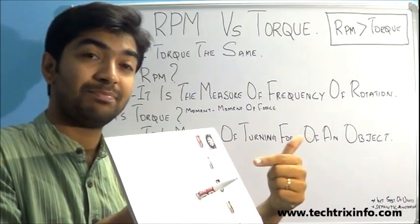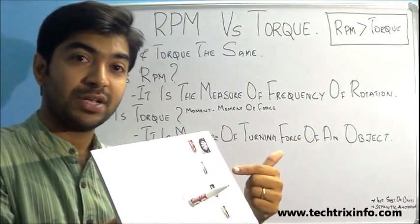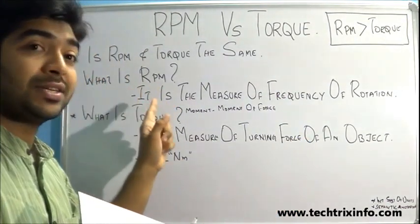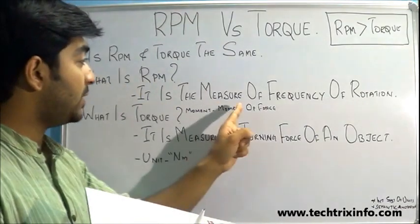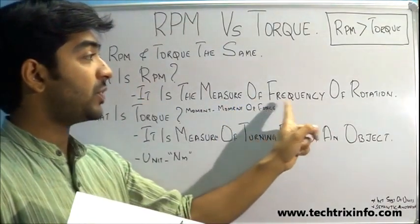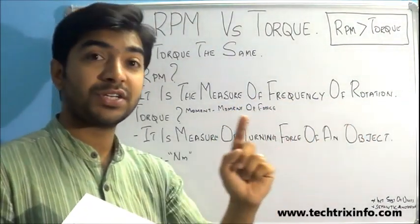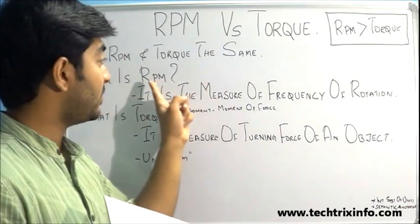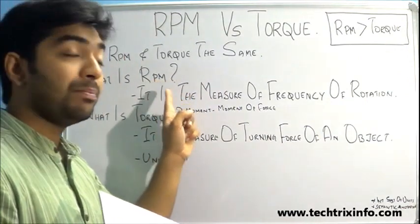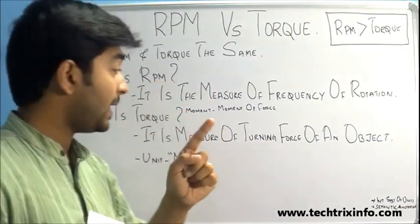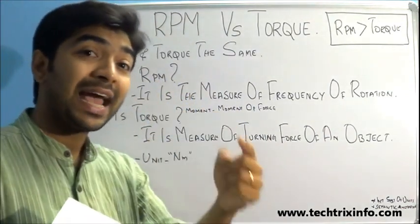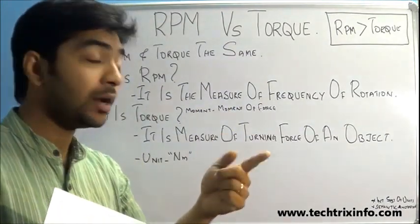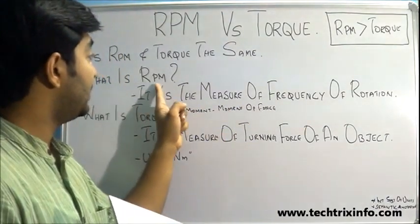So simply put: RPM is the speed of rotation, or the frequency of rotation in one minute — revolutions per minute. And torque is the force which is required to make those revolutions.